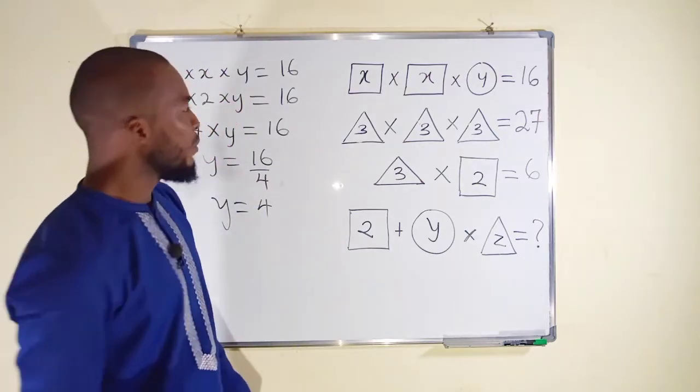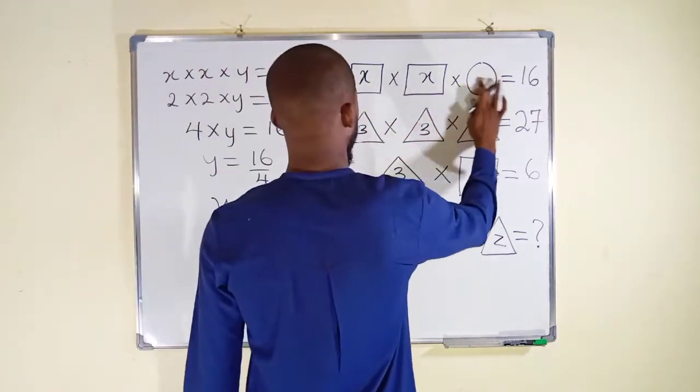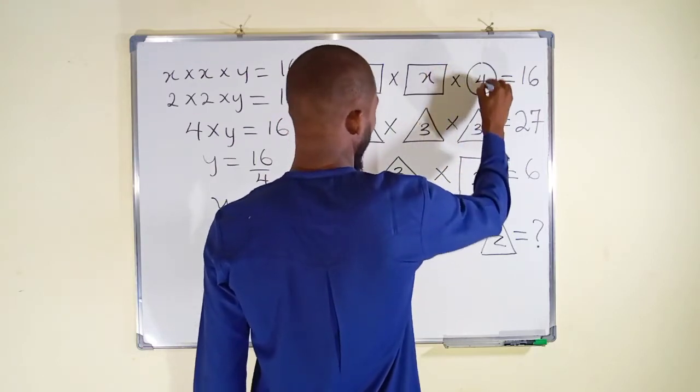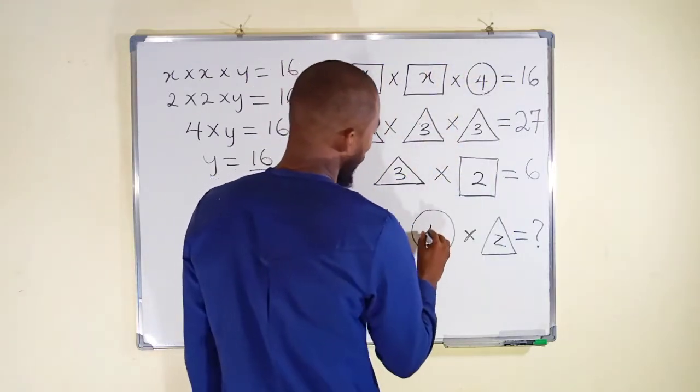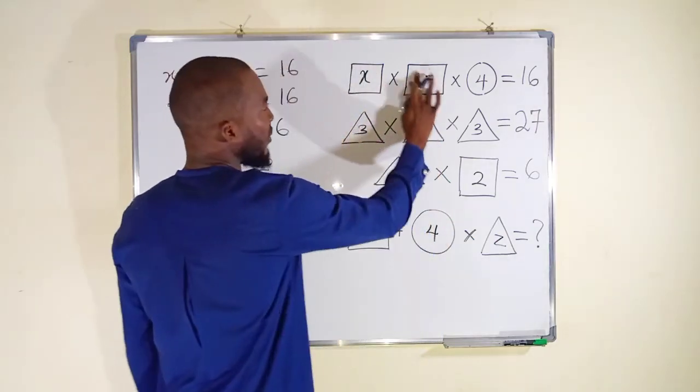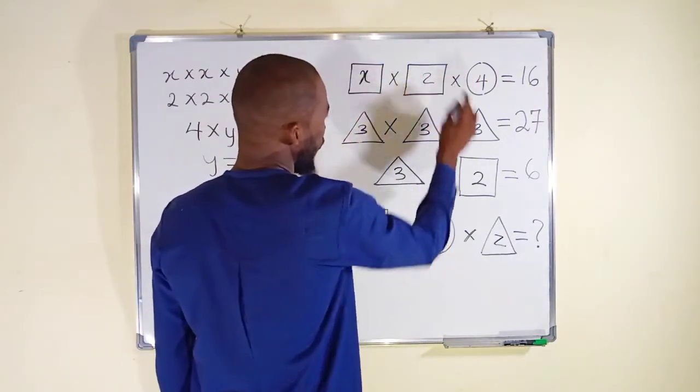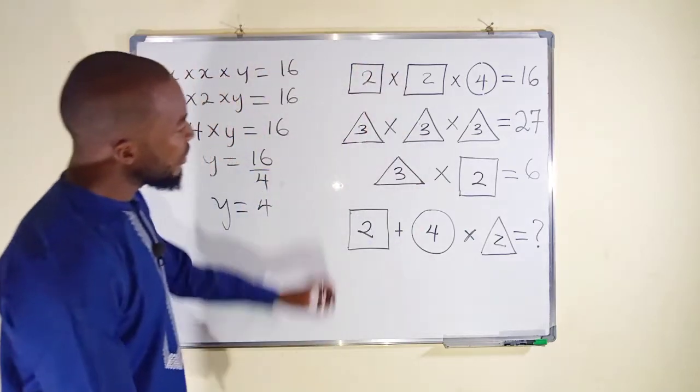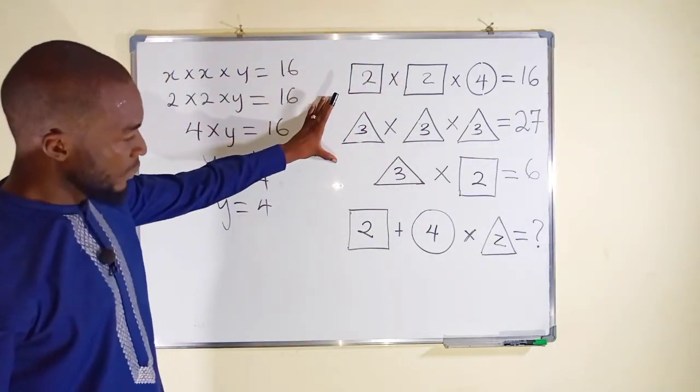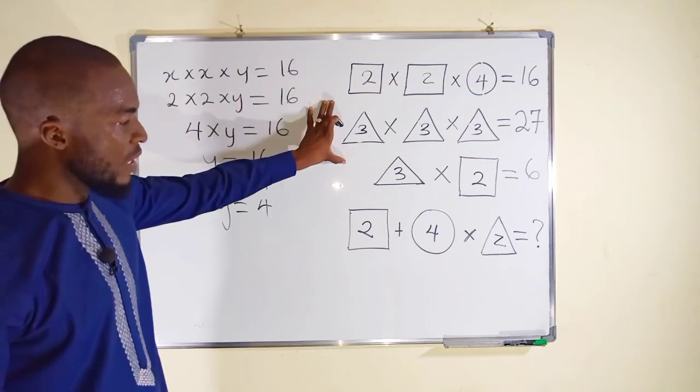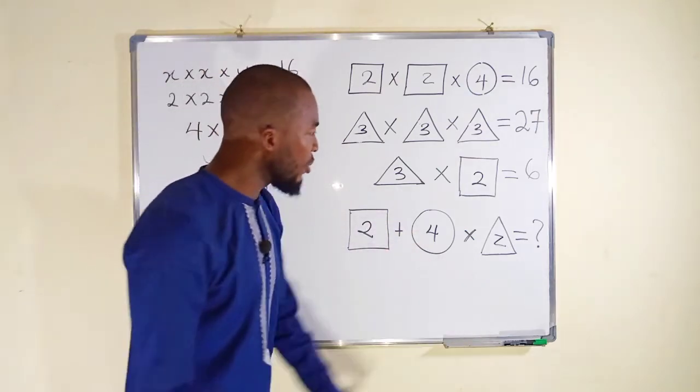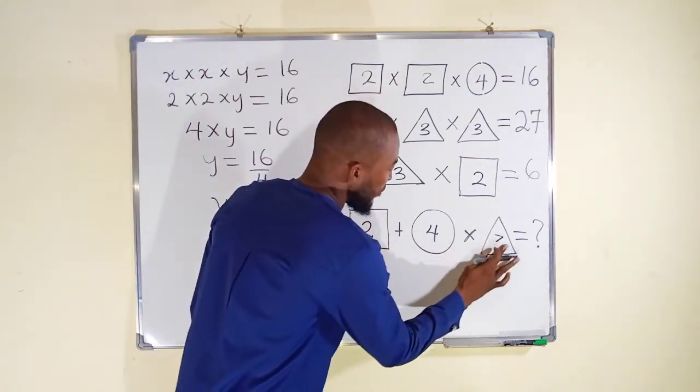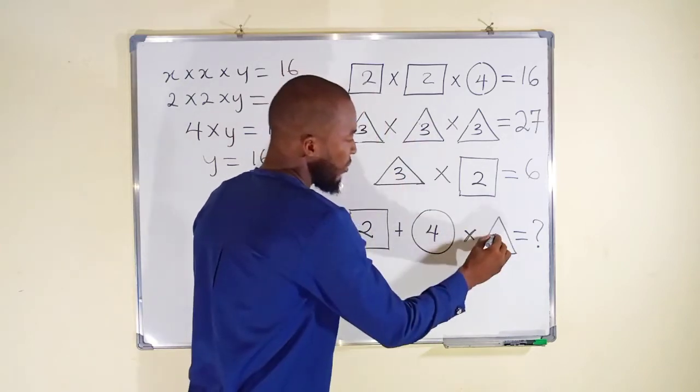So what y represents is circle and this is equal to 4. This is also equal to 4. This has been obtained to be equal to 2 from here. So all the three equations have been solved, so we can use the information here to solve for the third equation. Okay, I have forgotten to replace this z which is equal to 3.